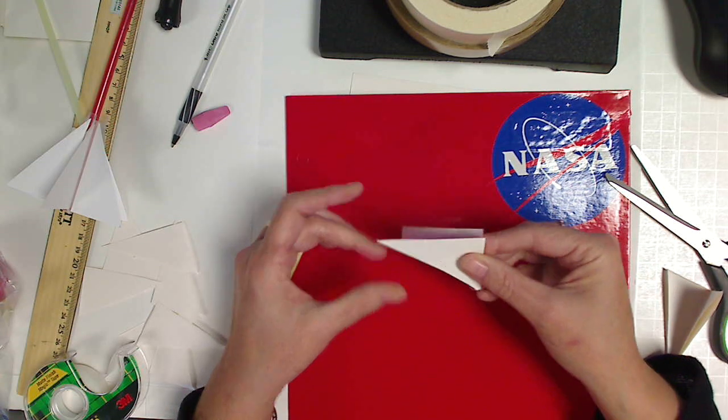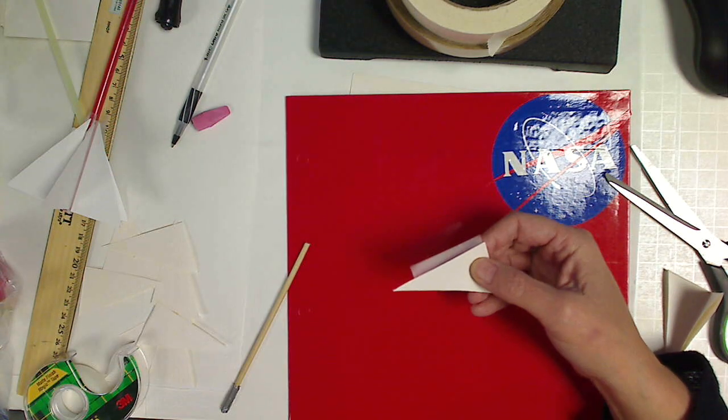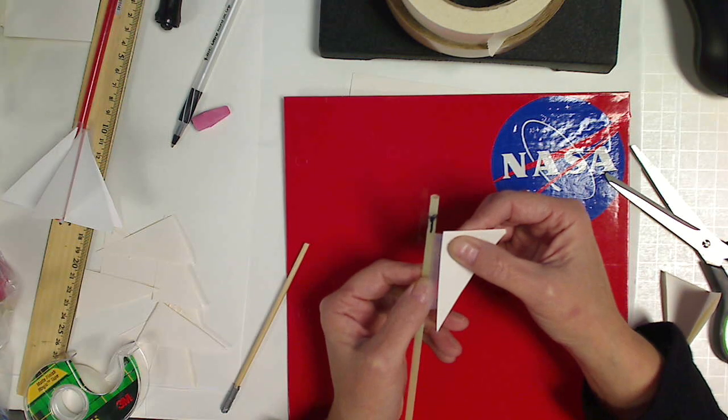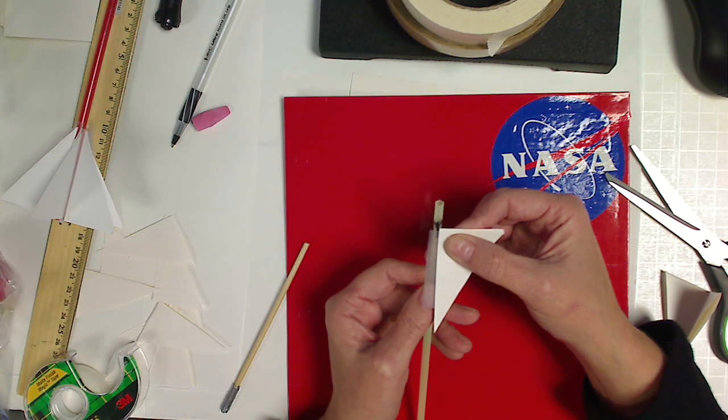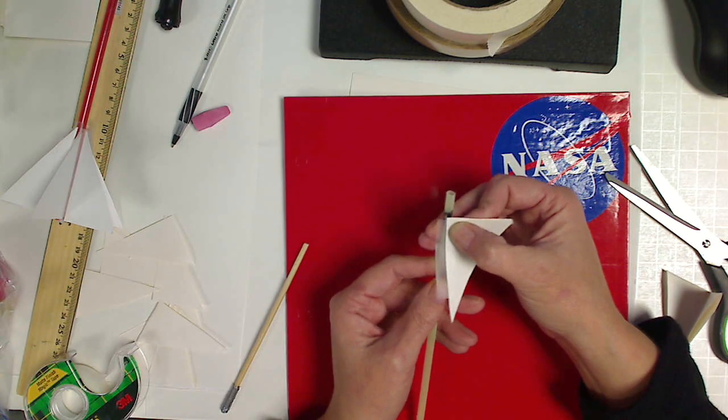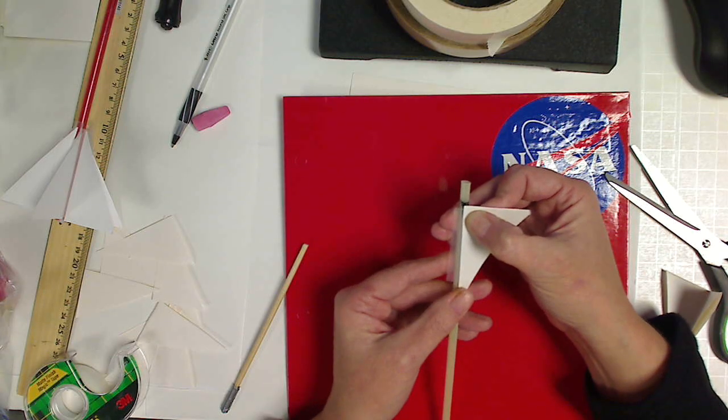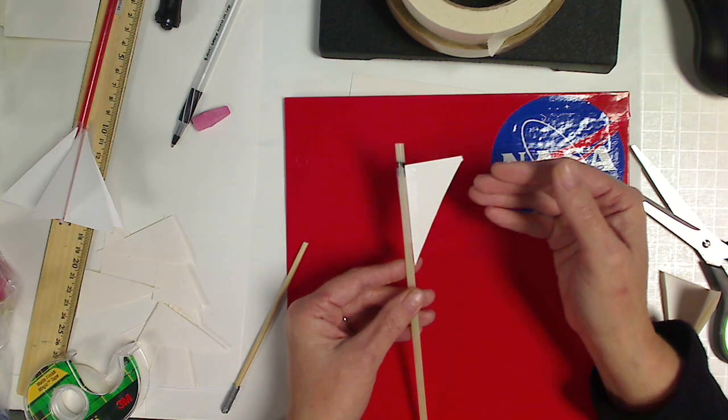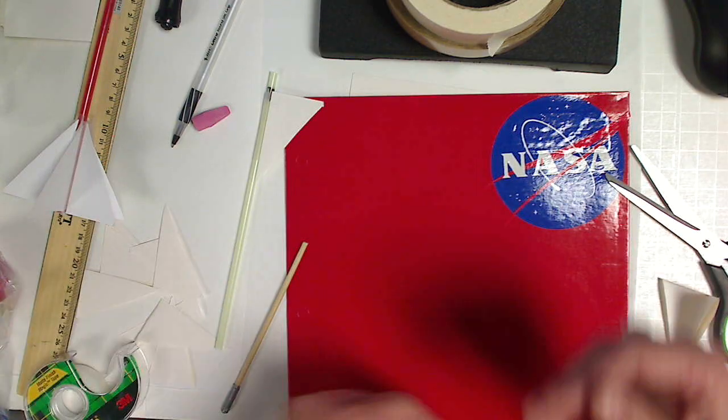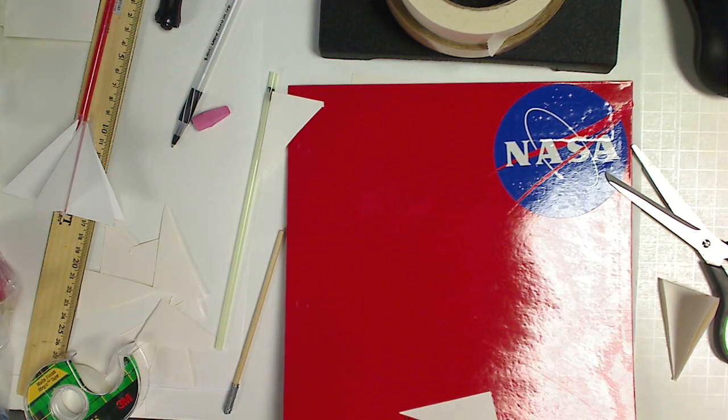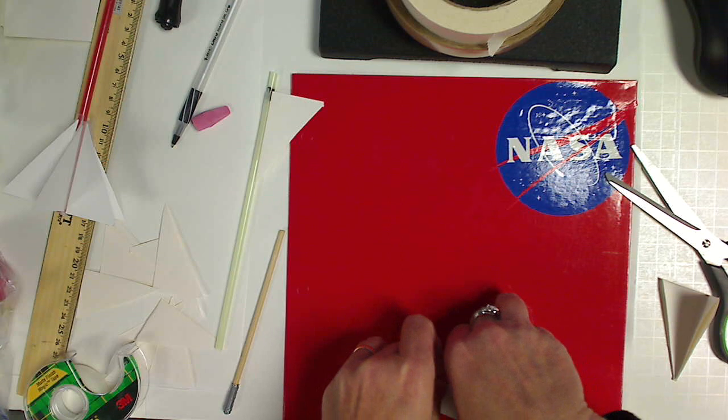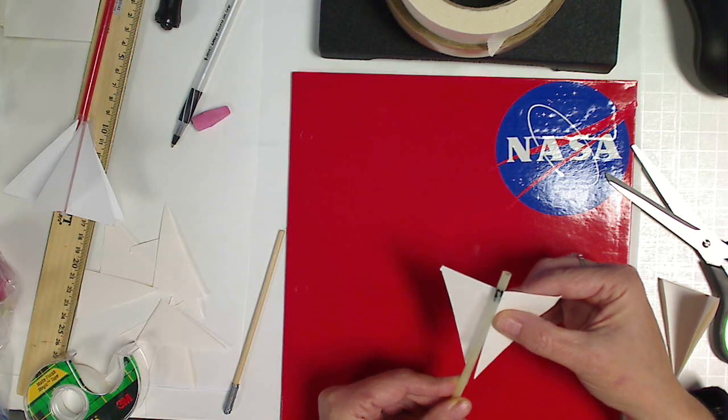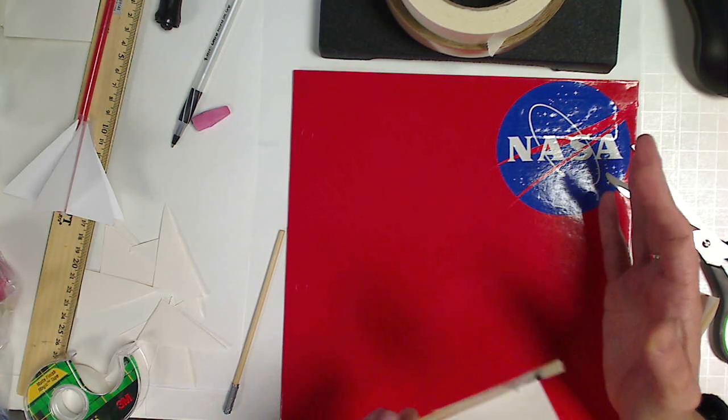So what I do is I take my tape and I measure about half of it and place it down on the fin. So I've got half of the tape on the fin. Then I take my straw and I line it up with the fin with the straw where that line I marked was and I wrap the tape down. So now I have one fin adhered.